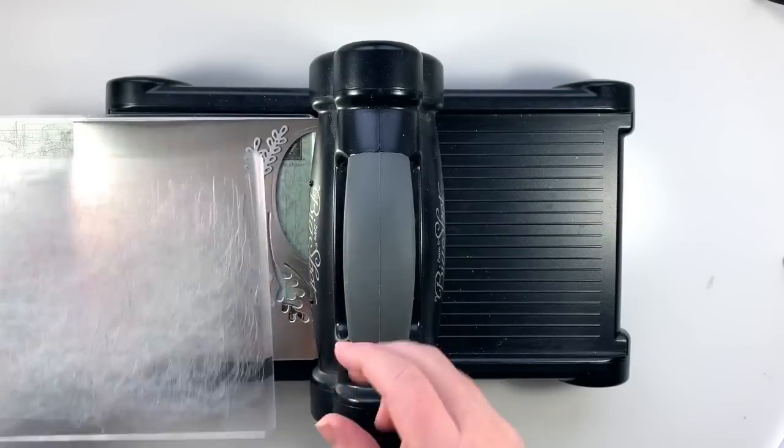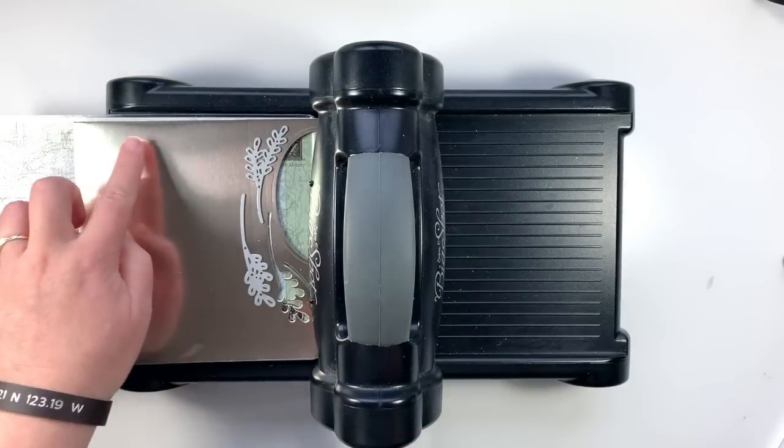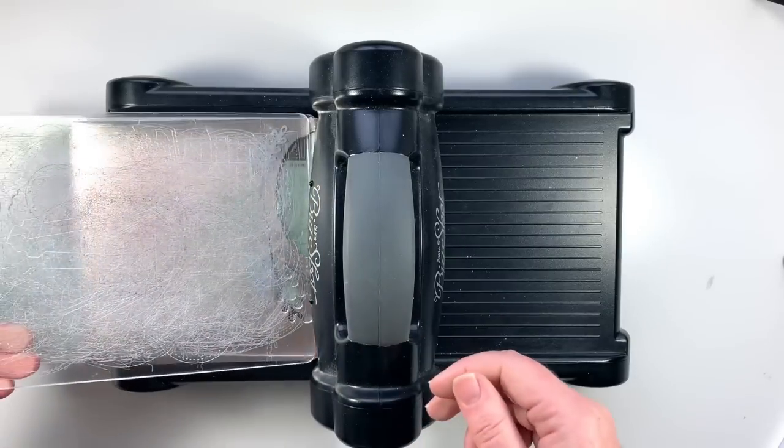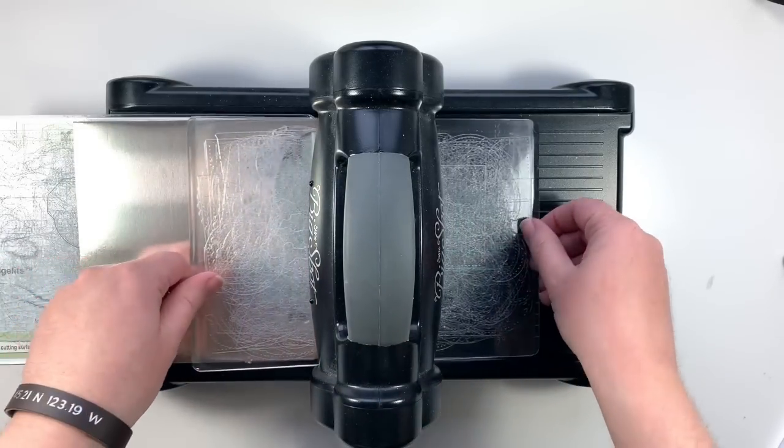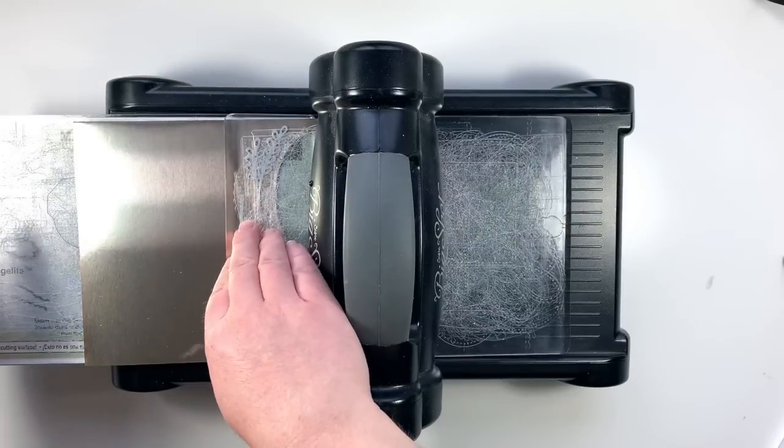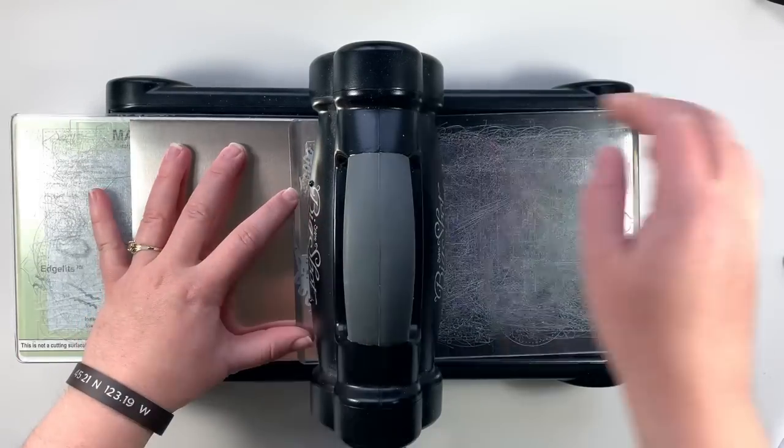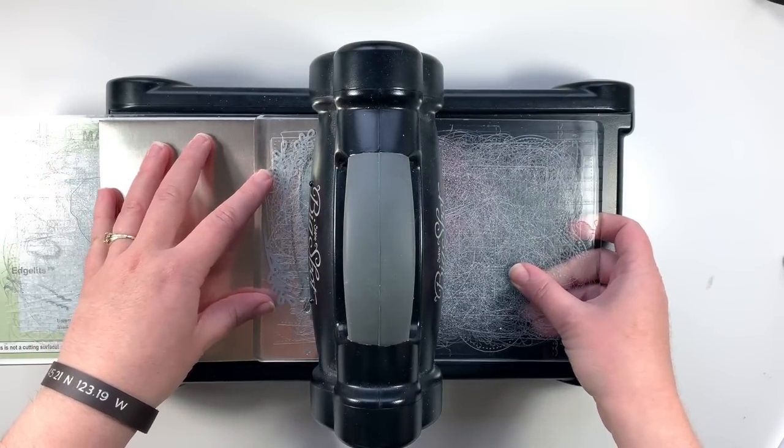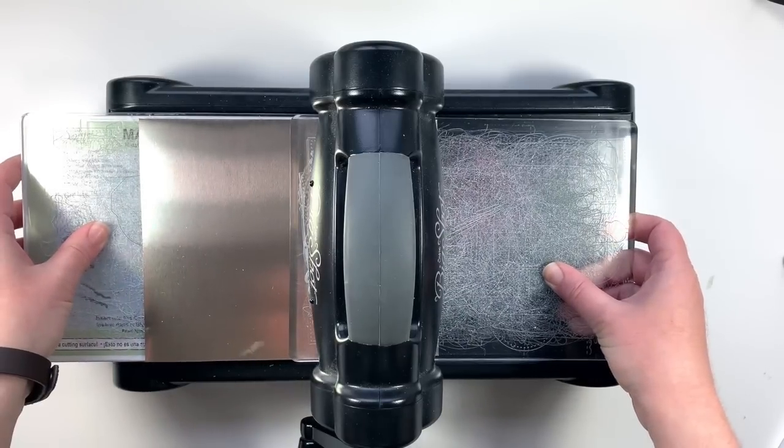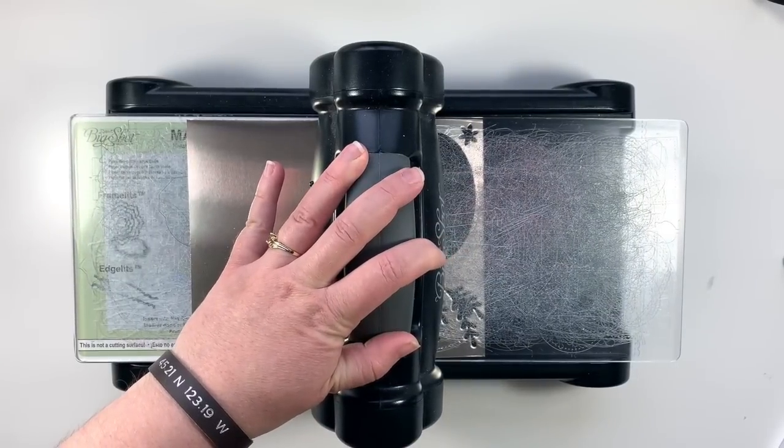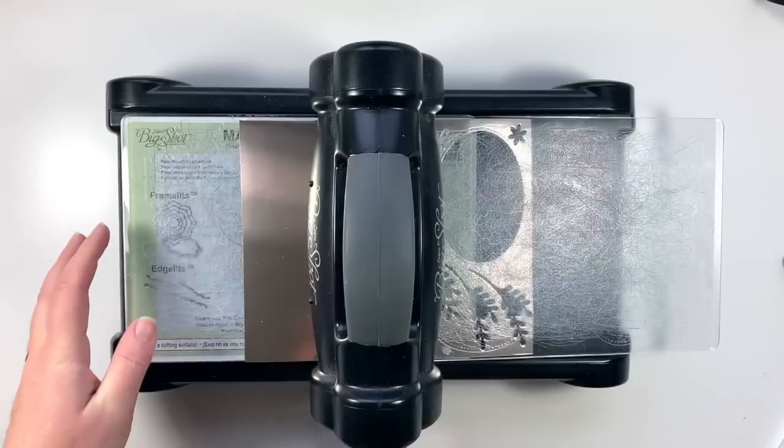But if I were to put it flat down, it would really mess up this gorgeous smooth surface I have on my foil. So what I like to do is slide it all the way in just to cover the dies. That way you're not getting that wrinkly look on the rest of your paper. So then you just kind of scooch it into your machine until you get it to catch and then you can roll it through.